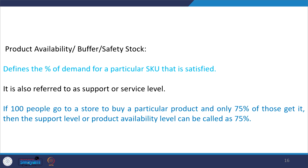Product availability level has a very strong connection with consumer satisfaction and their likelihood of returning for retail shopping. Only if consumers are provided with the products they are looking for — so that they do not leave the store empty-handed — will this determine their satisfaction levels. A customer who frequently leaves empty-handed due to poor product availability may start going to competitors.